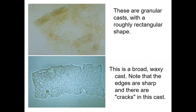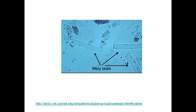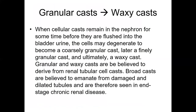This is a waxy cast — a very old, granular cast. Dehydration and changes in pH can cause this kind of appearance. This is a broad waxy cast, and you can really see it here. This is actual urine microscopy showing casts. The static PowerPoint has more background information on these.